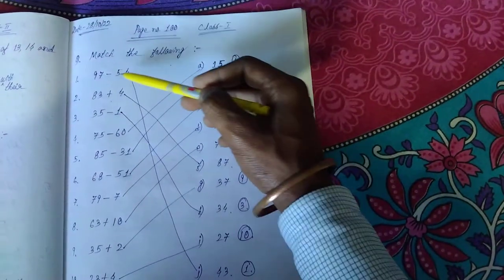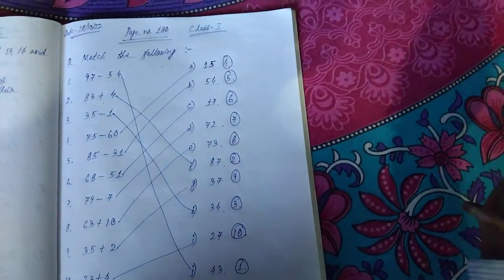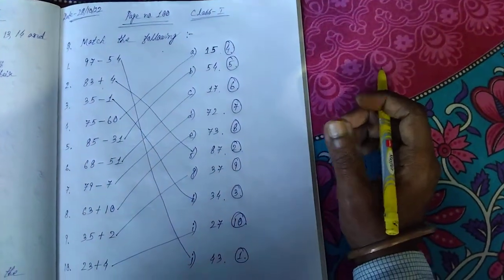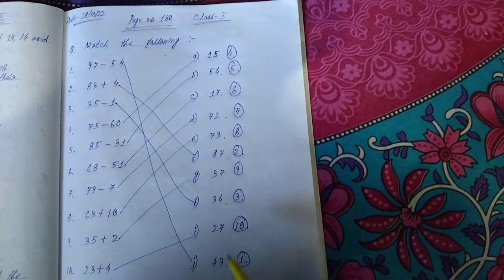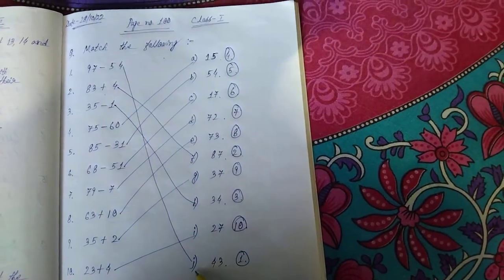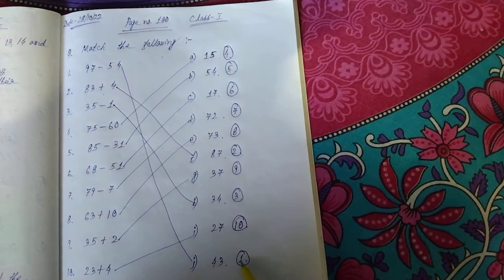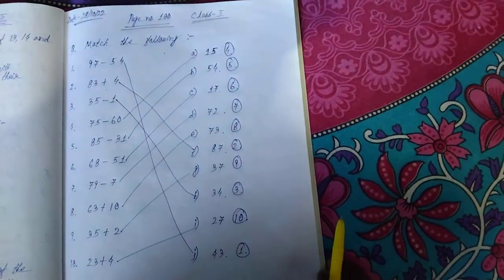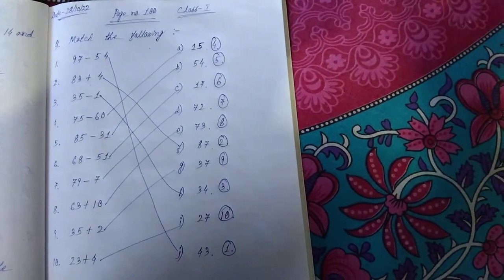Suppose 97 minus 54, you are getting 43 in your rough paper. After doing the subtraction, you will get that 43 here in option number J. So you will have to put here 1 or you will have to draw the lines. This is it. Bye bye students.